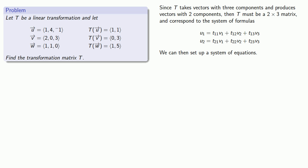Since our transformation applied to the vector (1, 4, -1) gives us the vector (1, 1), we could substitute these values for v1, v2, v3, u1, and u2, which will give us two equations in our system.